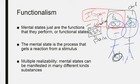This is called multiple realizability. Mental states can be manifested in many different kinds of substances. So, the process can occur in squishy gray matter organic substances,